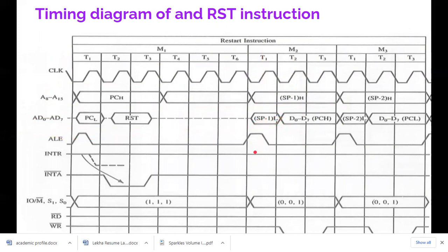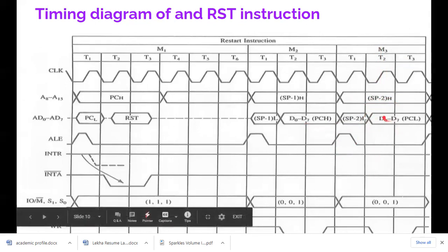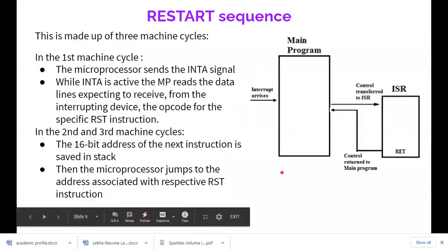In the first T1, address latch enable goes high saying that the data here is an address, and then the lower order address is placed as data in the database. In the next machine cycle, the stack pointer is moved, that is it is decreased, and then the memory location of the stack pointer is placed here.